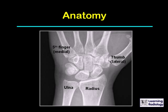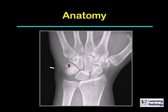The ulna is medial, and the proximal carpal row from lateral to medial includes the scaphoid (or navicular), the lunate — the distance between the scaphoid and the lunate is usually less than three millimeters — and the triquetrum, which overlies the pisiform, shown by the white arrow.